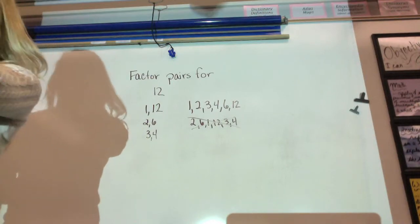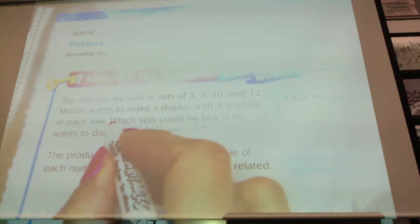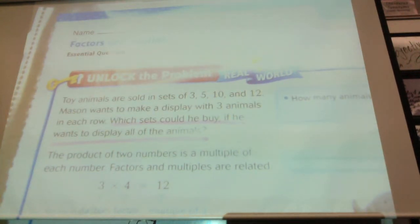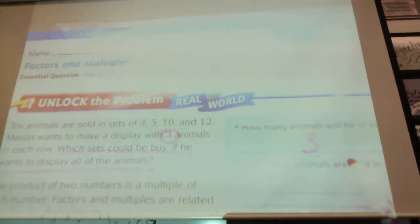We are on 5-4. Toy animals are sold in sets of 3, 5, 10, and 12. Mason wants to make a display with three animals in each row. Which set could he buy if he wants to display all the animals? What is the question asking us? What do they want to know? Which sets could he buy if he wants to display all of the animals? How many animals can be on a shelf or in a row? Three.